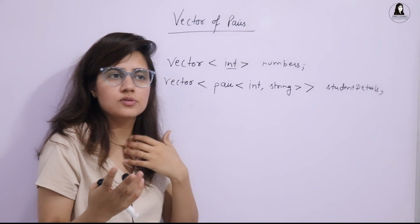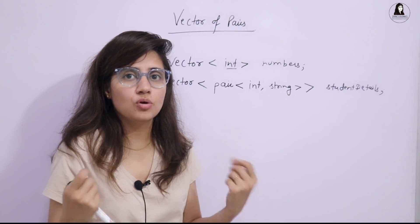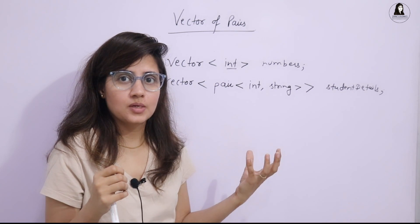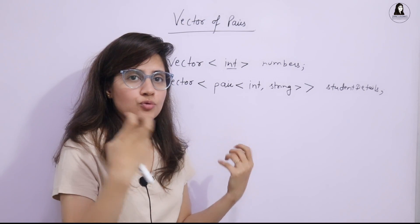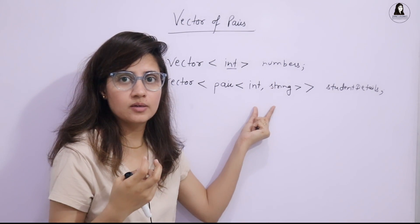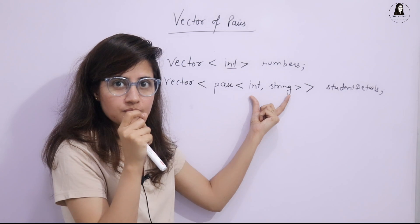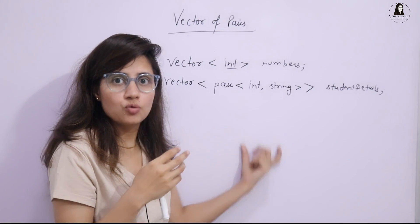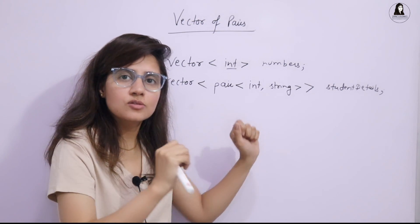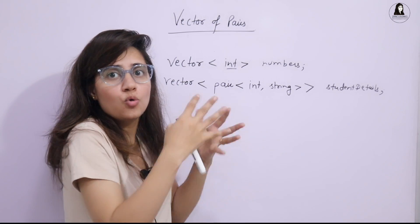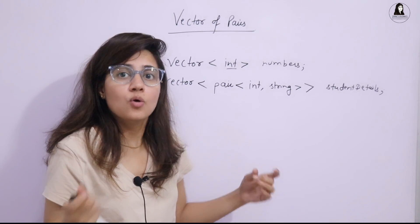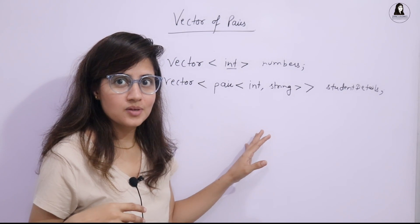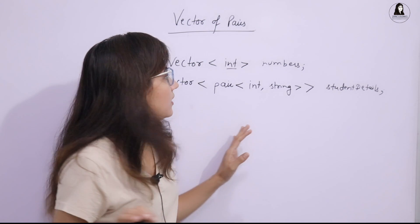When should you use vector of pairs? If you want to group and perform some operations on two related pieces of data — like coordinates, keys, or student details such as name and roll number — one way to achieve this is to use vector of pairs. There can be multiple ways to store this kind of data, but one way is vector of pairs.